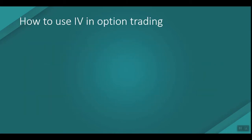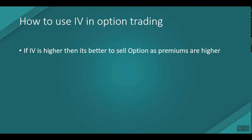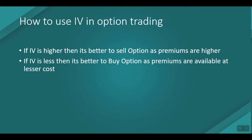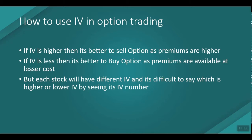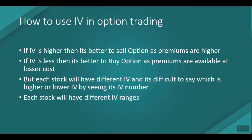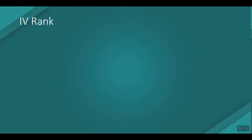How to use IV in option trading: if IV is higher, it's better to sell options as premiums are at a higher value; if IV is lower, it's better to buy options as premiums are available at a lesser cost. However, each stock will have a different IV, and it's difficult to say which is higher or lower just by looking at the IV number. For example, some stocks may have 50 as a high IV while others may have 50 as a low IV, making it difficult to draw one conclusion.